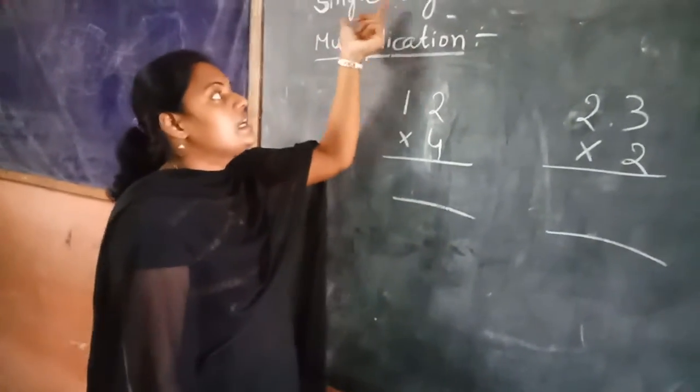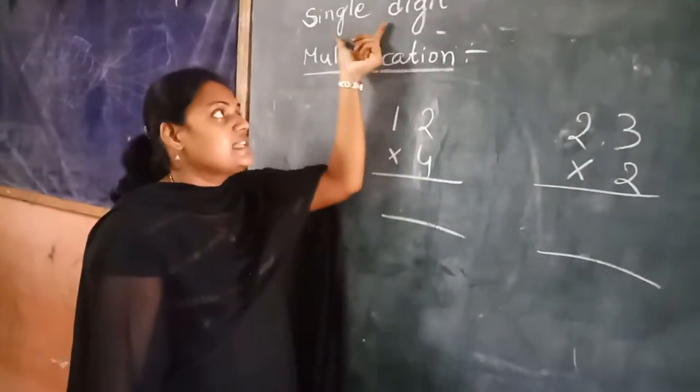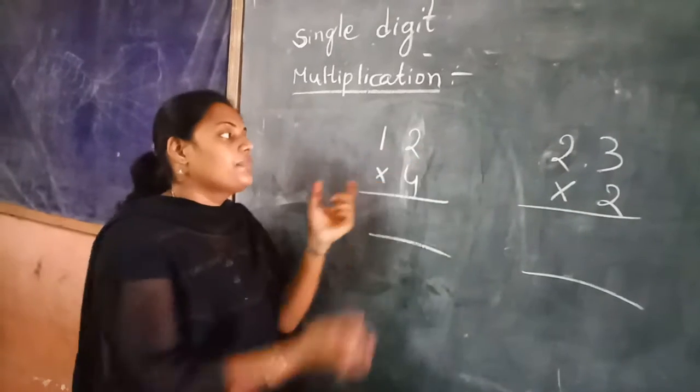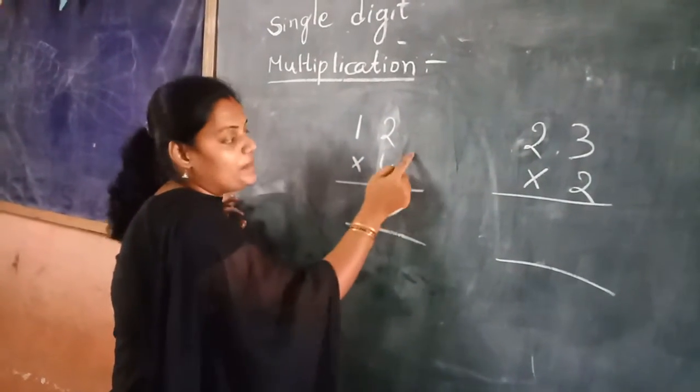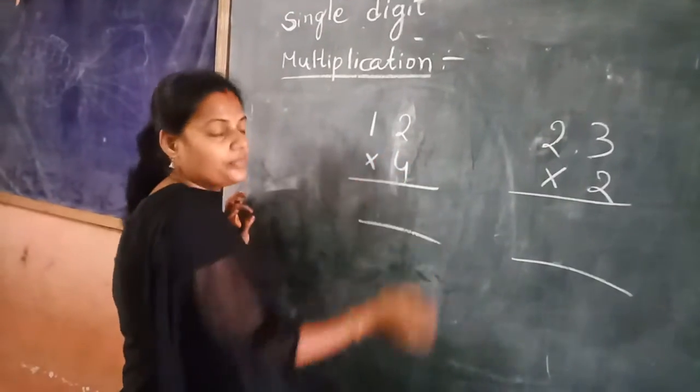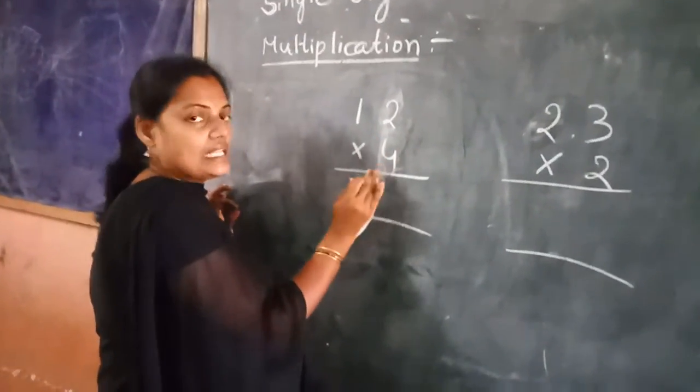The session name is single digit multiplication. Single digit multiplication we see here. What is the number? 1, 2 - 12 into 4. You are multiplying only with one number. How to multiply with one number on the screen now?